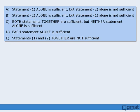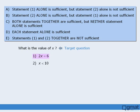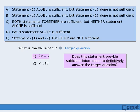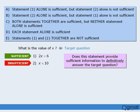Now let's try another question. This question is very similar to the last, except statements 1 and 2 have been reversed. Beginning with statement 1, does this statement provide sufficient information to definitively answer the target question? The answer is yes, so statement 1 is sufficient. Now on to statement 2 — is this information sufficient to answer the target question? The answer is no, so statement 2 is insufficient. The correct answer is A, which says that statement 1 alone is sufficient but statement 2 alone is not.